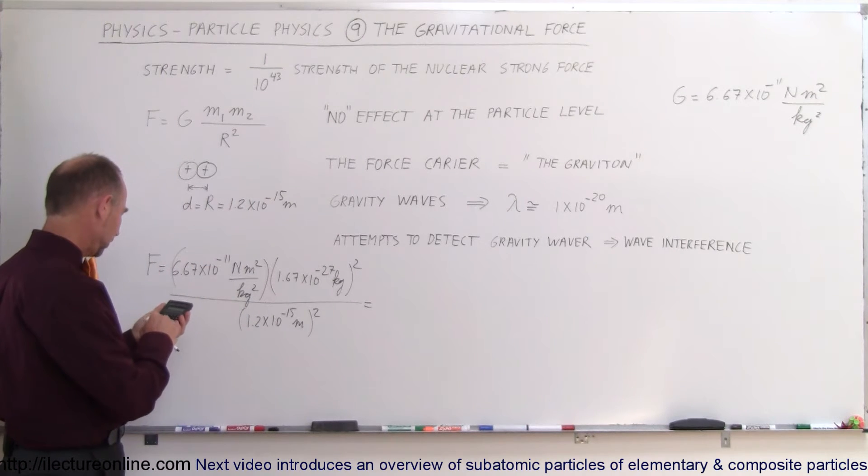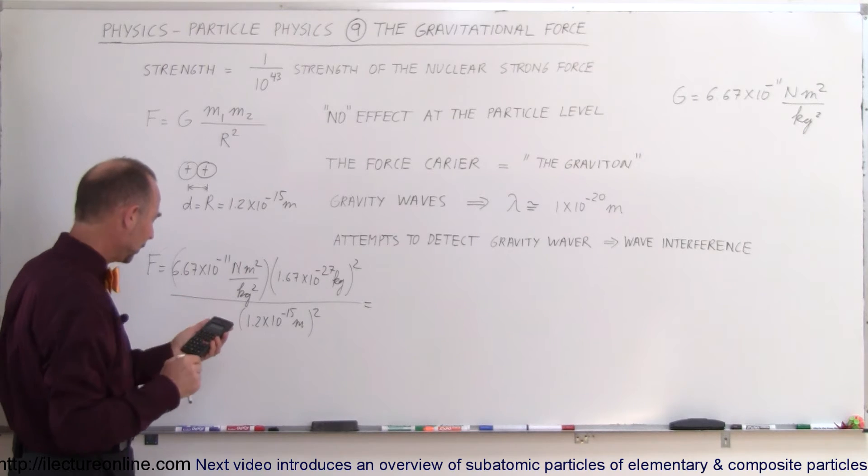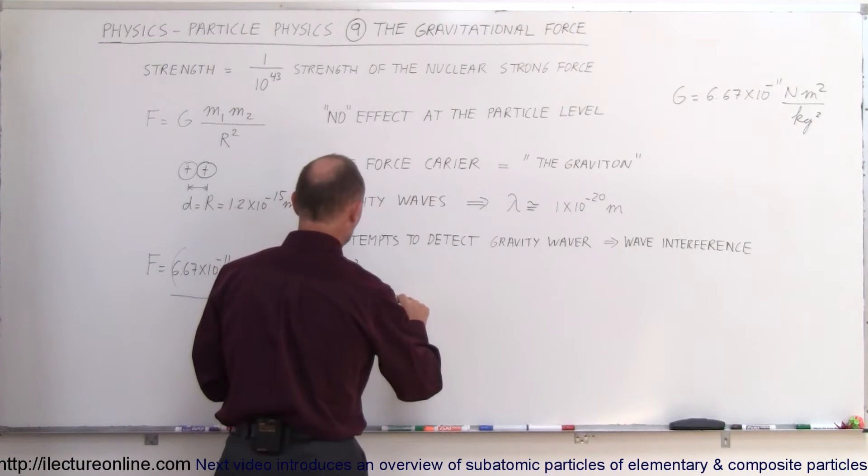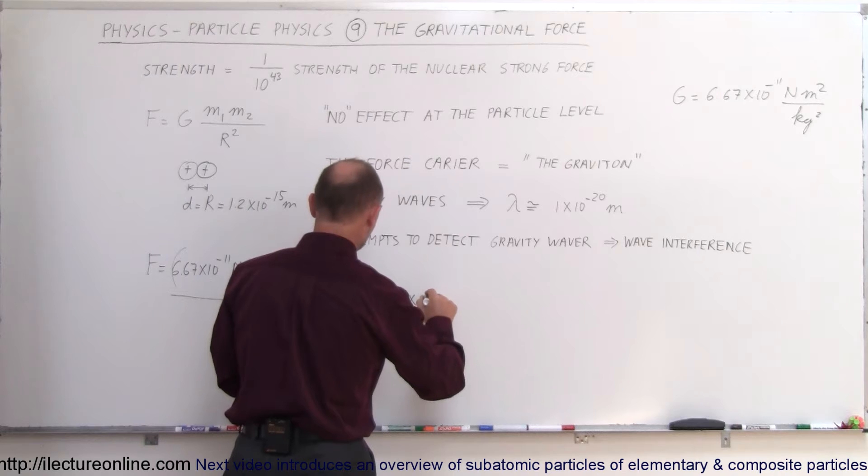Let's find out what the force would be in this case. So we have 6.67 e to the minus 11 times 1.67 e to the minus 27, we have to square that, divide that by 1.2 e to the minus 15, square that as well. And we get 1.29 times 10 to the minus 34 newtons.